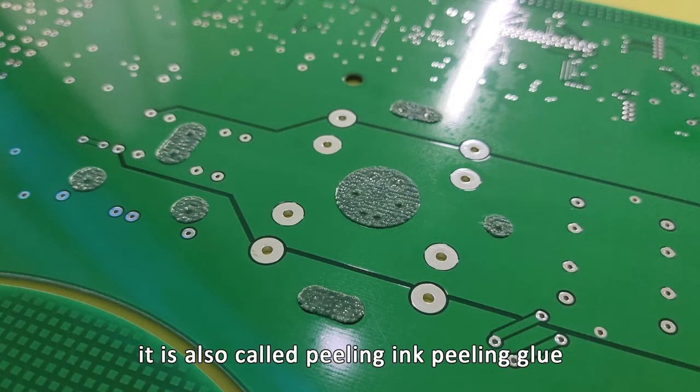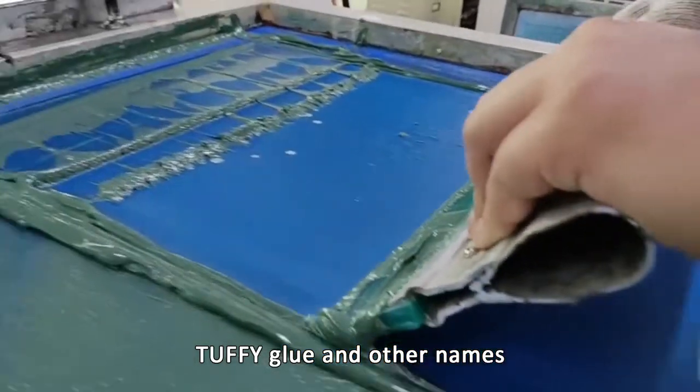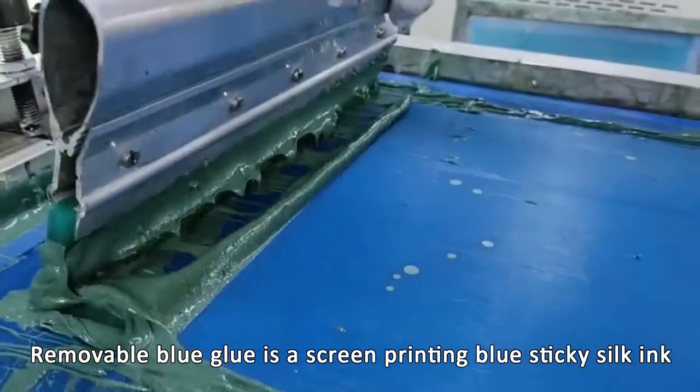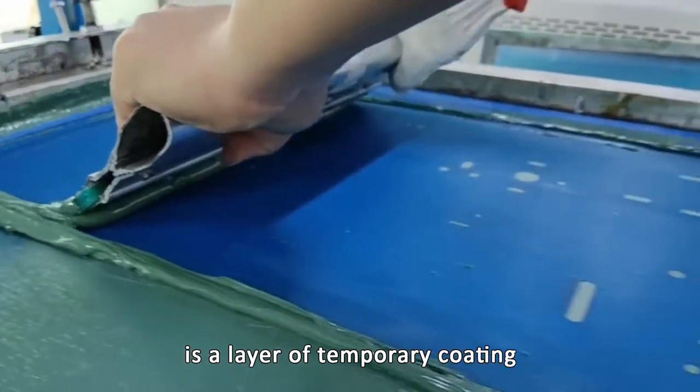It is also called peeling glue, toughy glue, and other names. Removable blue glue is a screen printing glue, sticky silk ink, and a layer of temporary coating.